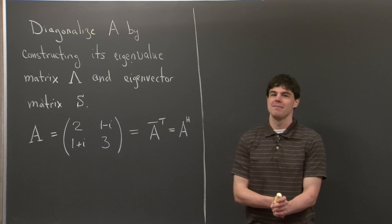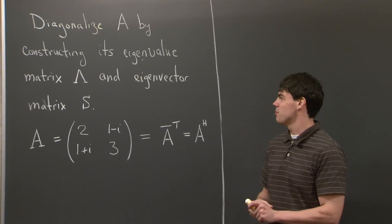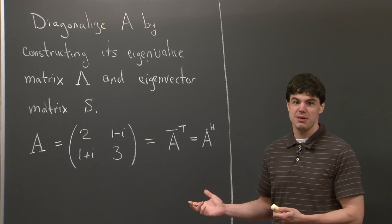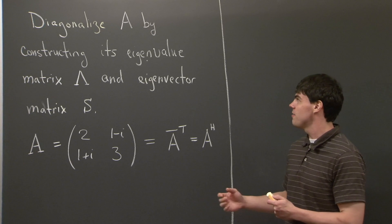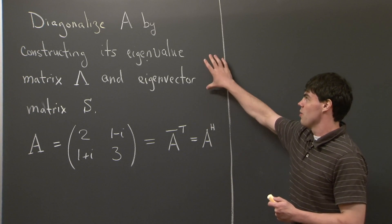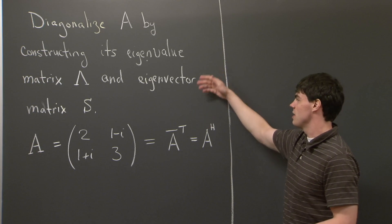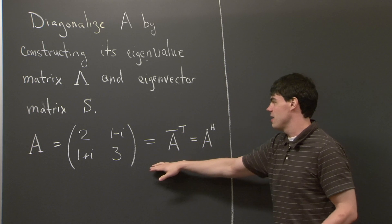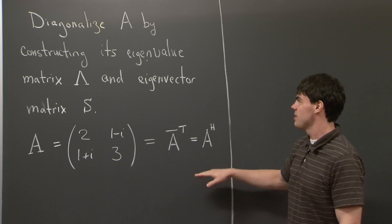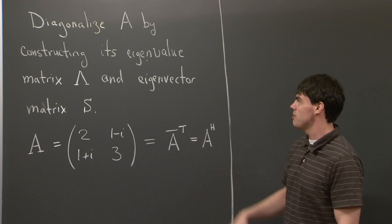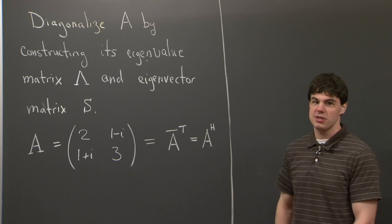Hi, everyone. Welcome back. So today we're going to tackle a problem in complex matrices. Specifically, we're going to look at diagonalizing a complex matrix. So given this matrix A, we're asked to find its eigenvalue matrix lambda and its eigenvector matrix x.